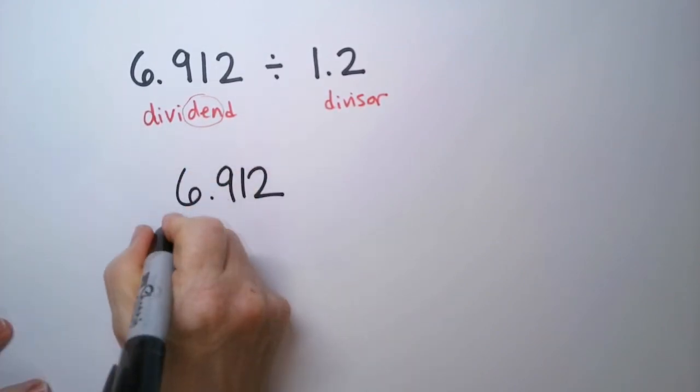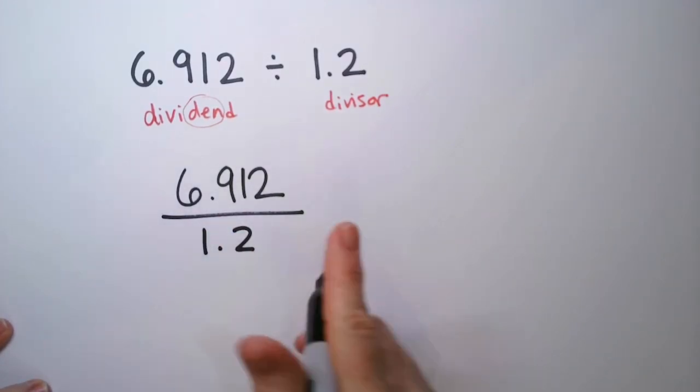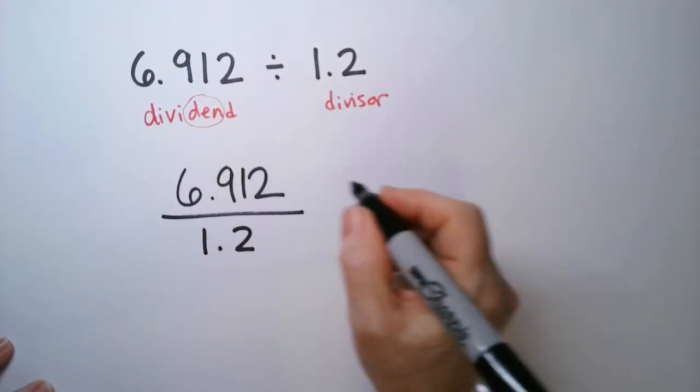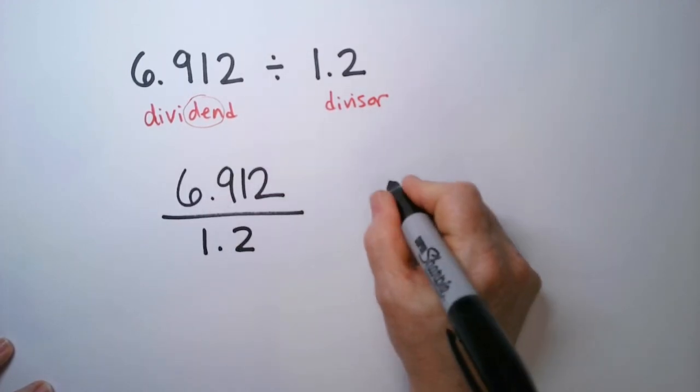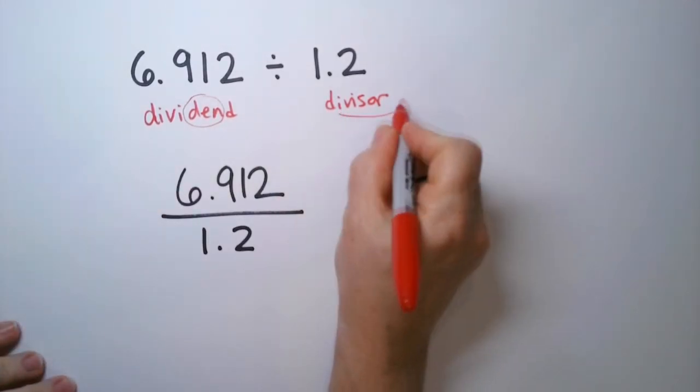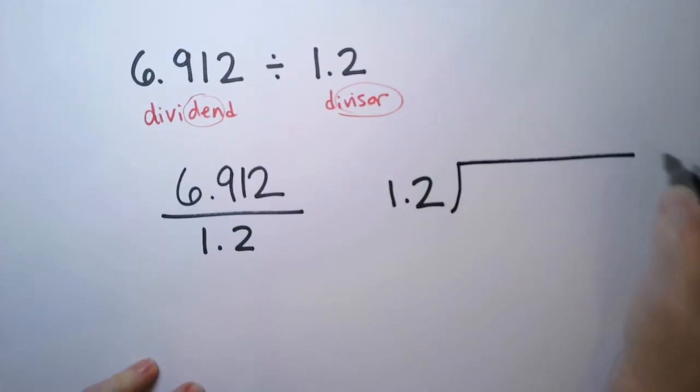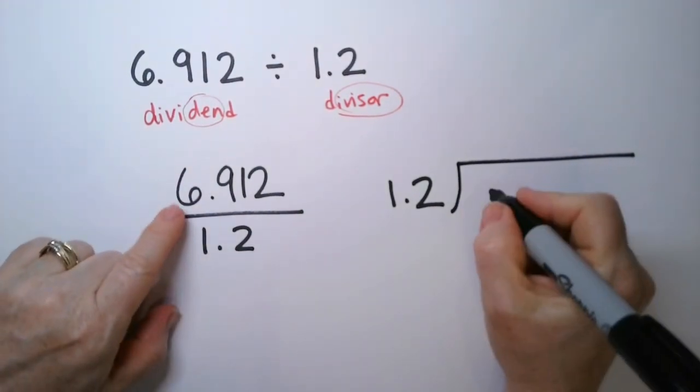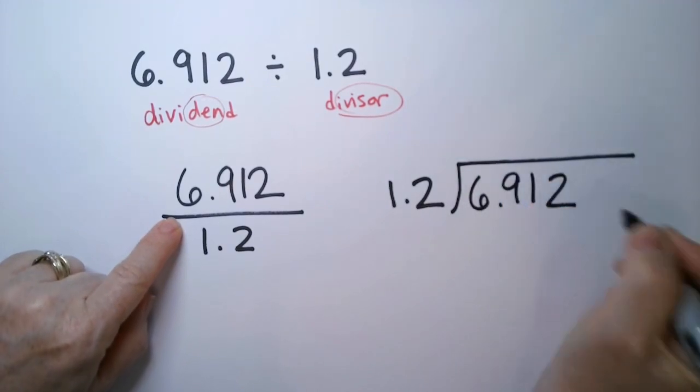This is how much stuff you have and I'm going to divide it by 1.2. The numerator, the dividend, always goes inside and the divisor goes on the outside. You see how it has the word visor in it? So let's put a little visor on this number. Then we're going to put this one in the den, 6.912.